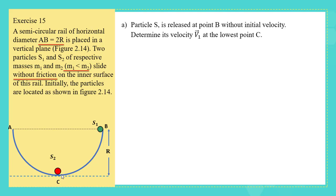Part A: particle S1 is released at point B without initial velocity. Determine its velocity V1 vector at the lowest point C. To solve this, we have two methods: either using conservation of mechanical energy, or using the kinetic energy theorem. Since no horizontal plane reference for gravitational potential energy is mentioned, we are going to use the kinetic energy theorem.